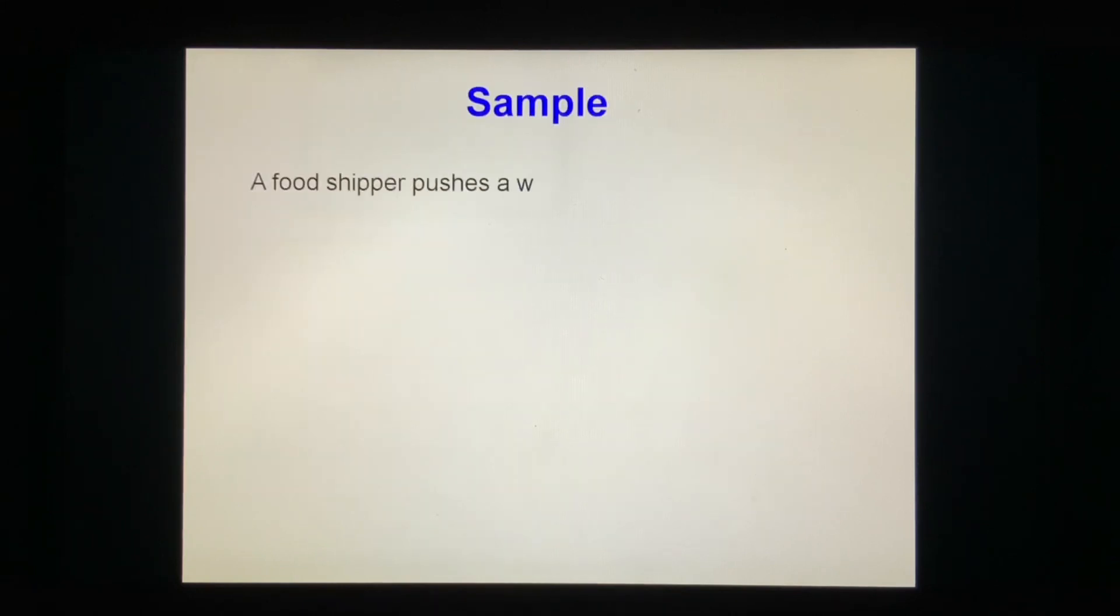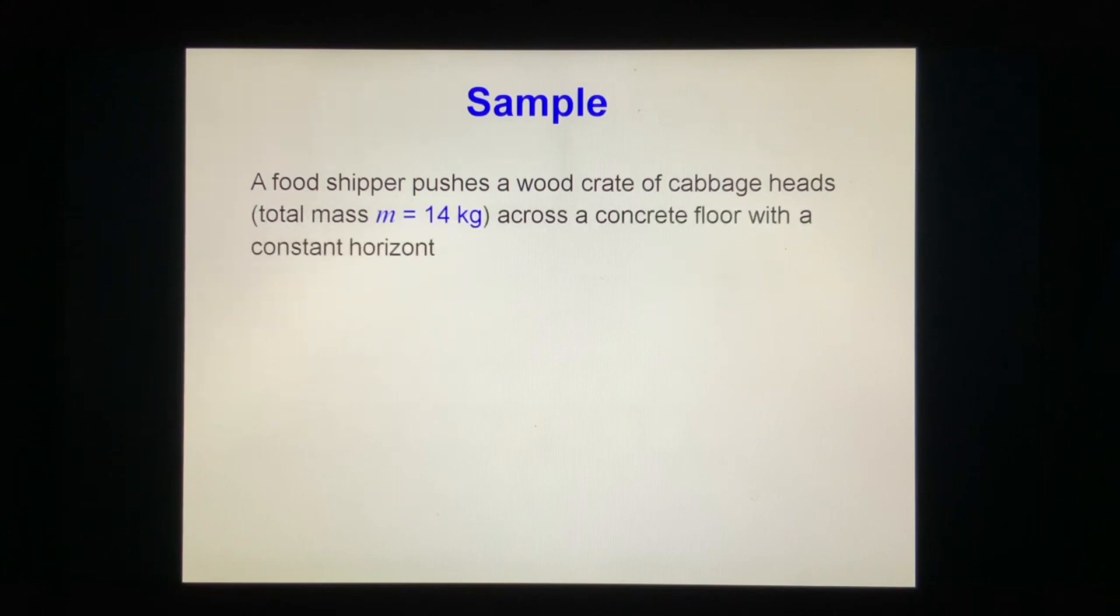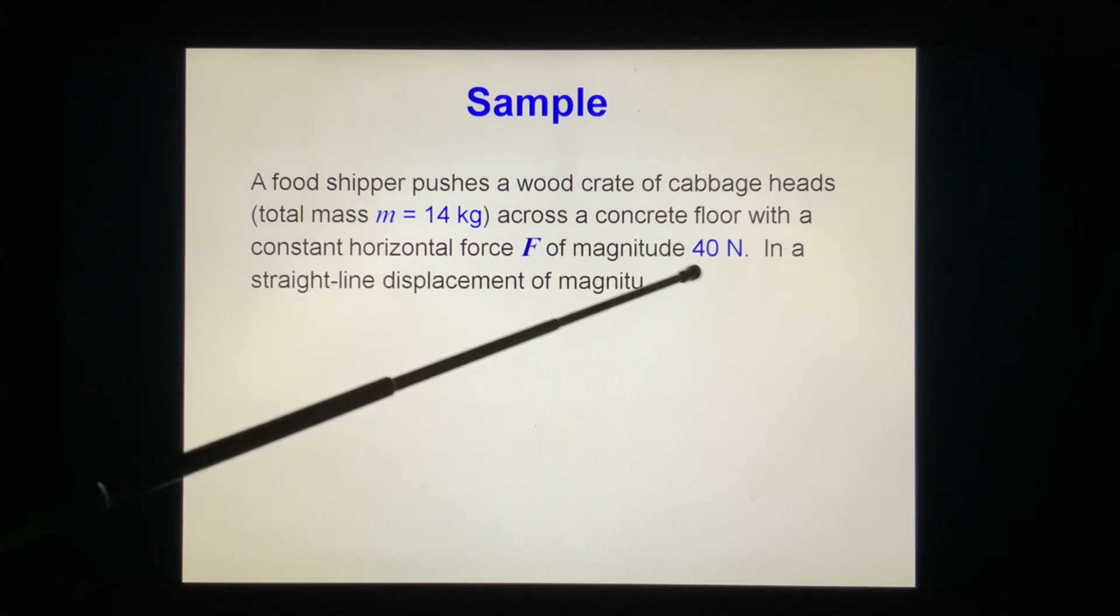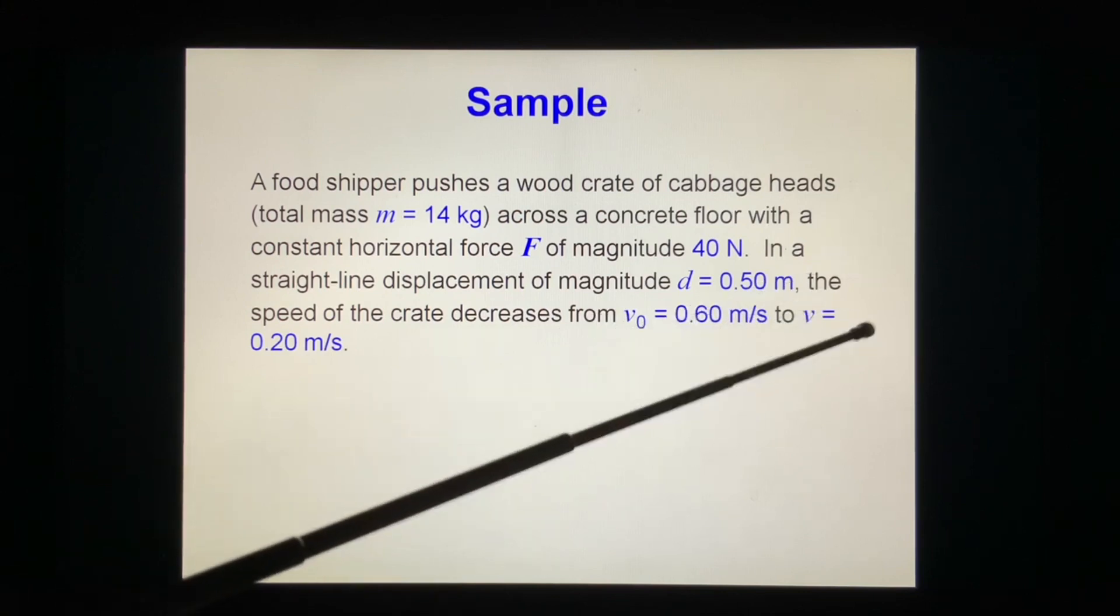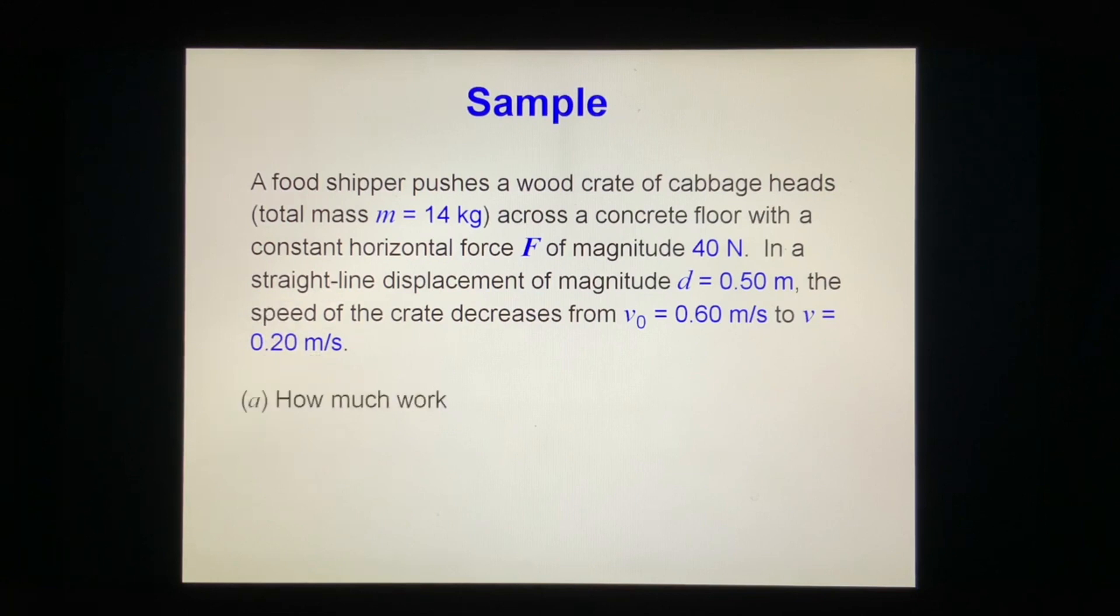Sample: A food shipper pushes a wood crate of cabbage heads, total mass m = 14 kg, across a concrete floor with a constant horizontal force F of magnitude 40 N. In a straight-line displacement of magnitude d = 0.50 m, the speed of the crate decreases from v₀ = 0.60 m/s to v = 0.20 m/s. Question (a): How much work is done by force F and on what system does it do the work?